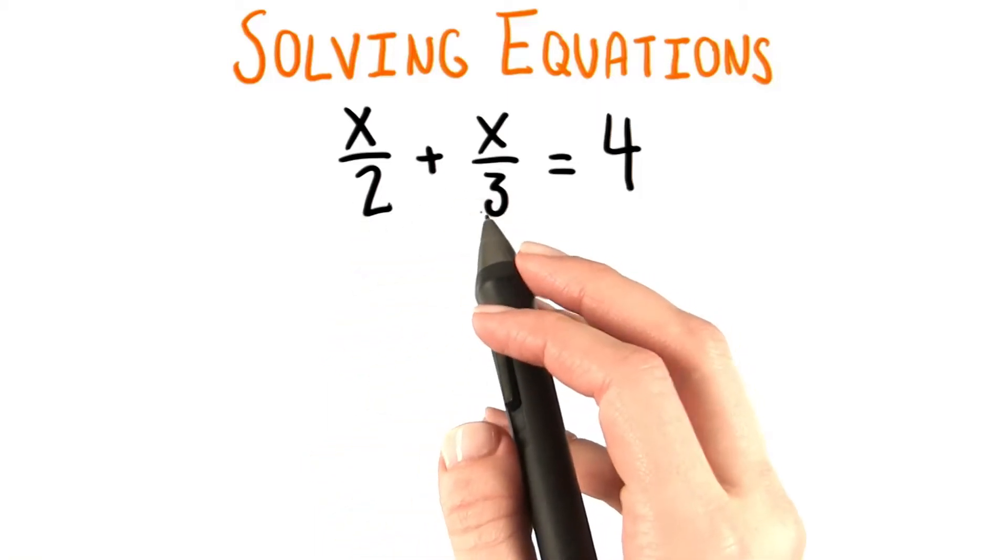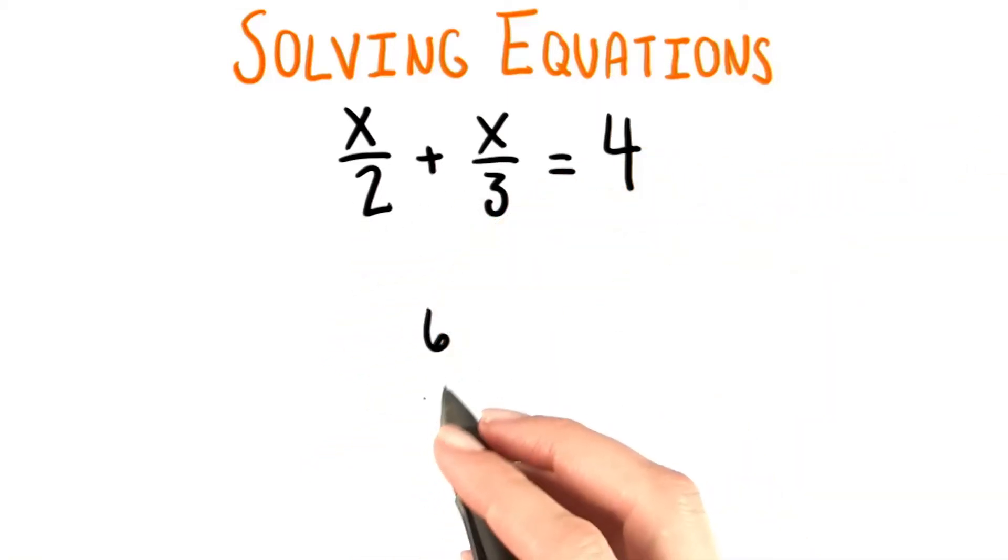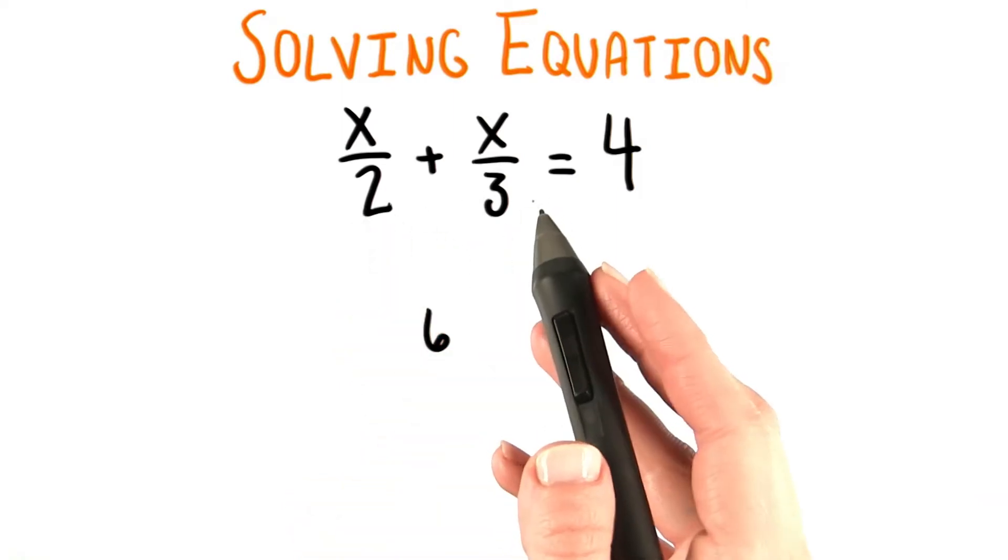The least common multiple of 2 and 3 is 6. So we know that's going to need to be the denominator of our combined fraction.